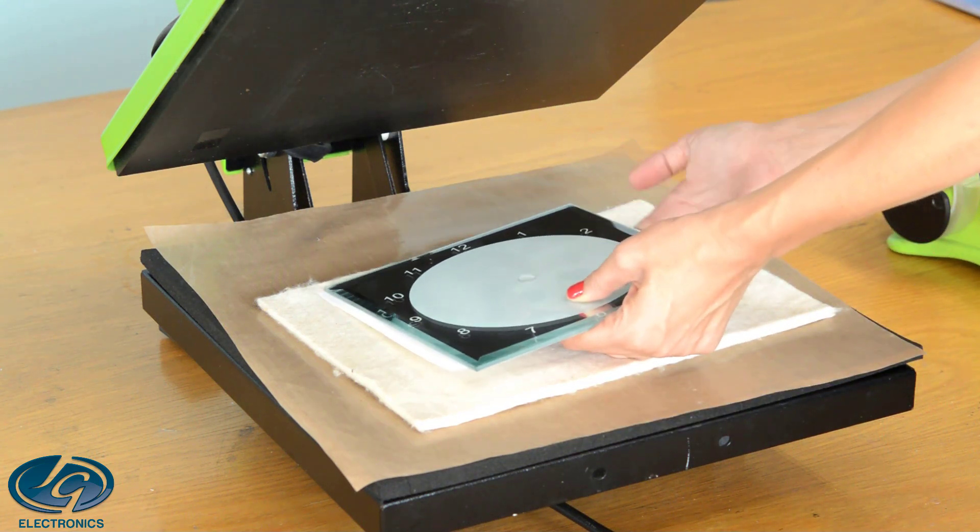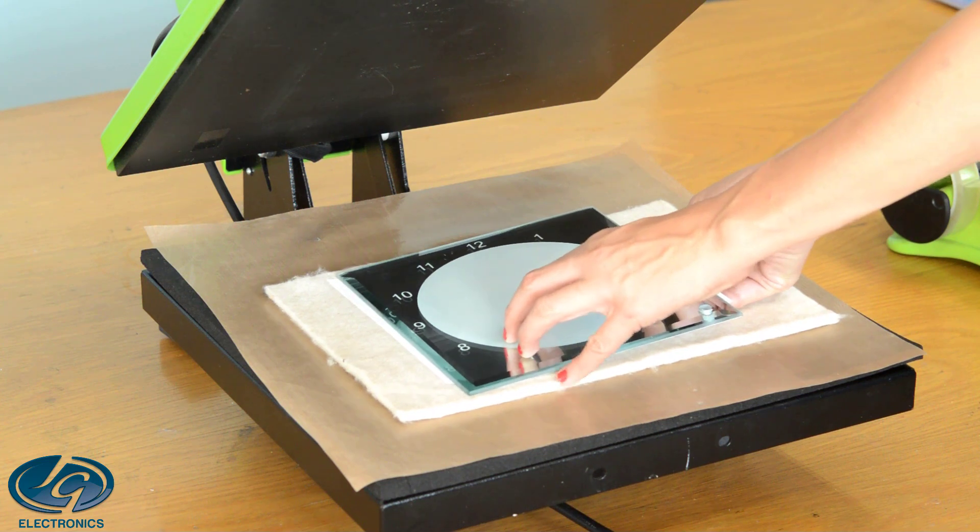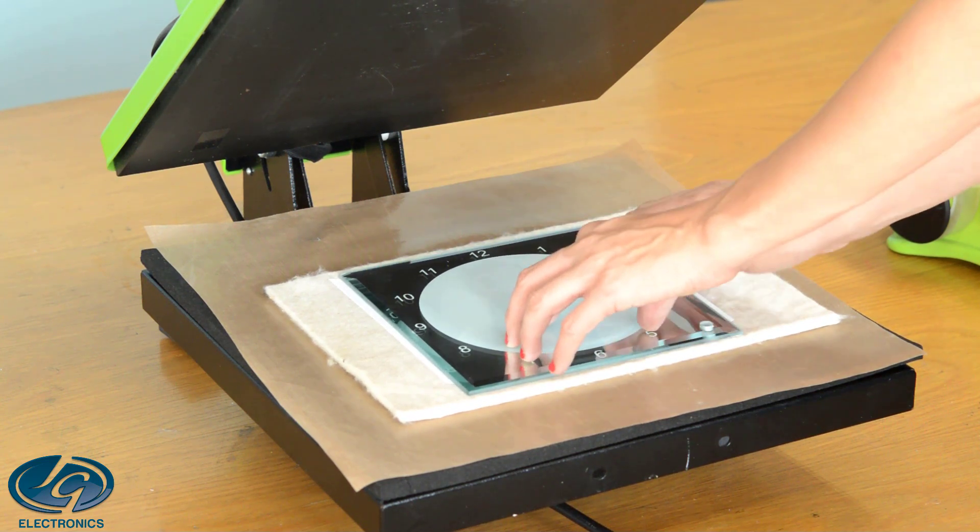Place the print with the glass on the Nomex pad. Make sure the print is at the bottom. Secure with heat tape.